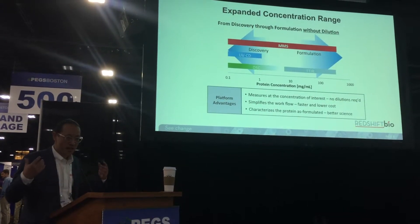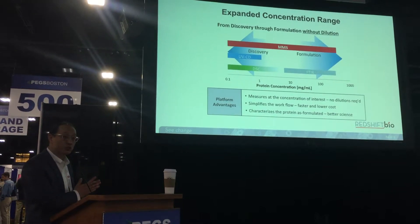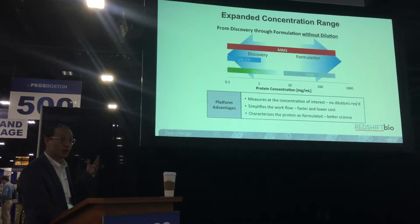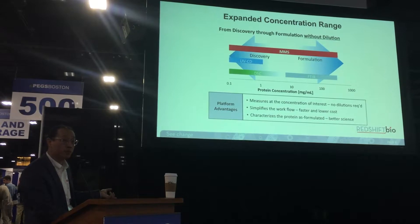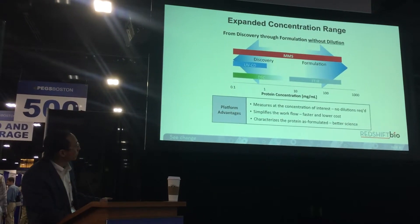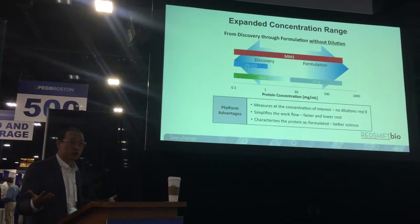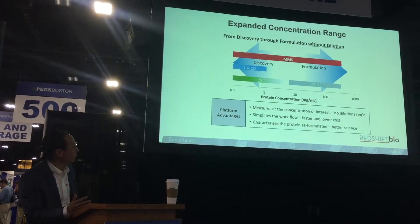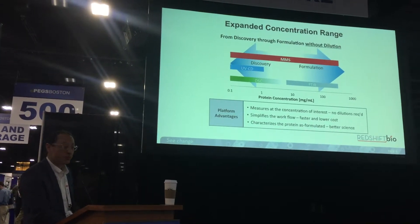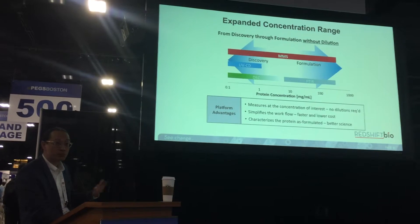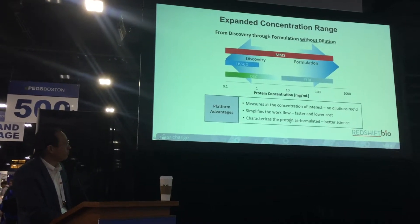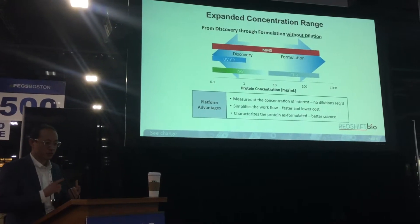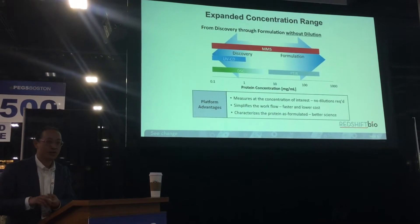With the added optical power and sensitivity, MMS allows us to measure protein samples across an extremely wide concentration range. We can actually take structural information from 0.1 mg/mL to in excess of 200 mg/mL — no dilutions required. You can take those measurements in the same instrument across all those concentrations. This is important because you can measure at the concentration of interest, simplifying the workflow with less prep and faster turnaround. More importantly, it's better science: you are characterizing your protein as formulated — not putting it in a crystal, not using deuterated water, and not diluting it.